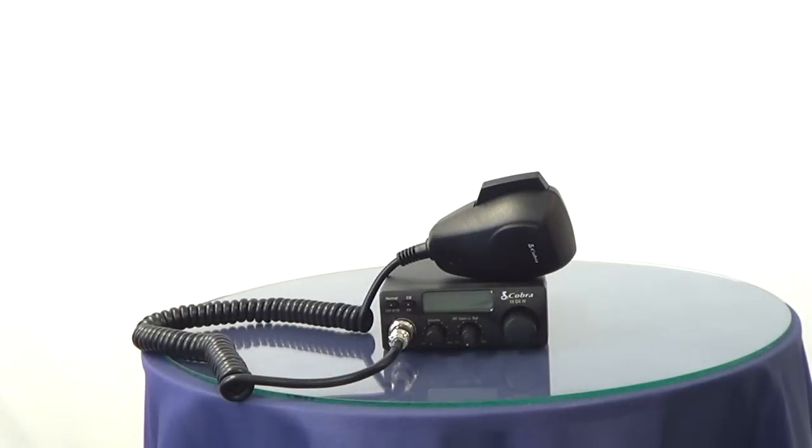This is the Cobra 19DX4. It's a smaller, simpler CB radio from Cobra. It's great for installations where you don't have a lot of space like a passenger car or a smaller pickup.